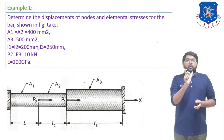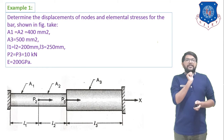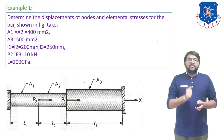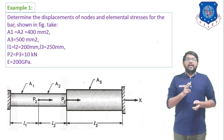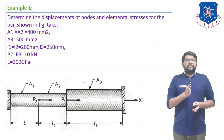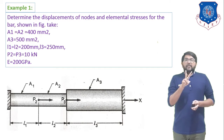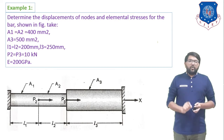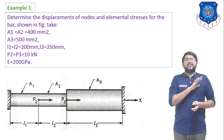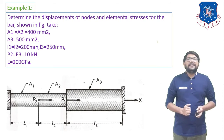From the figure, you can see there are a total of three elements with lengths L1, L2, and L3, and cross-sectional areas A1, A2, and A3. The values are: A1 = A2 = 400 mm², A3 = 500 mm², L1 = L2 = 200 mm, L3 = 250 mm. The modulus of elasticity is uniform for all three elements, with E = 200 GPa, which equals 200 × 10³ N/mm².